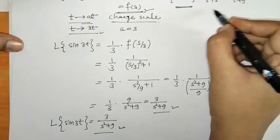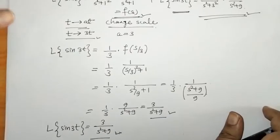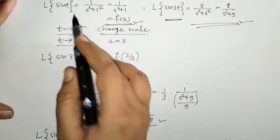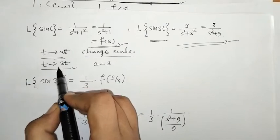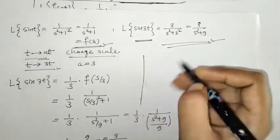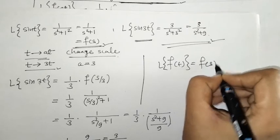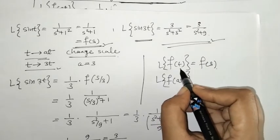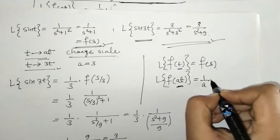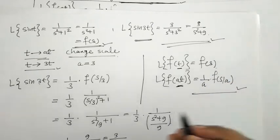This confirms the result we found earlier by the standard formula. This demonstrates the use of the Change of Scale Property: when we change the variable from t to at, we can find the new Laplace transform as (1/a) F(s/a).